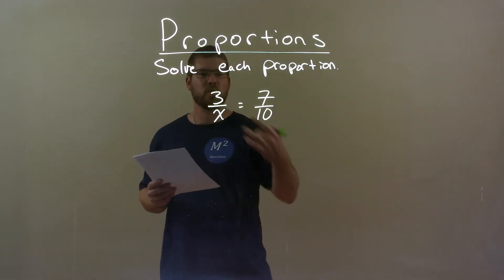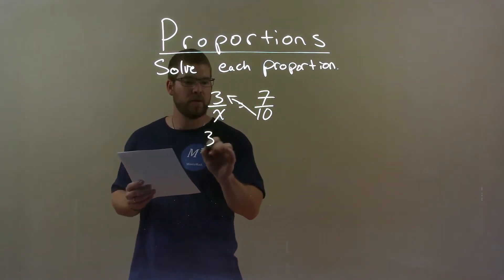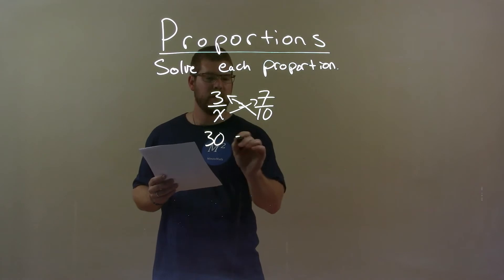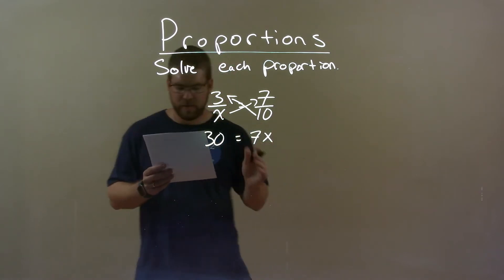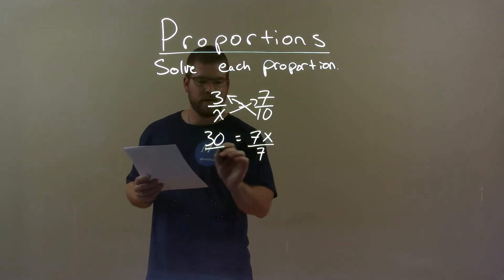first thing I want to do is cross-multiply. 10 times the 3 is 30, and x times 7 is just 7x. Then, from there, we want to get x by itself. So, I divide by 7 to both sides.